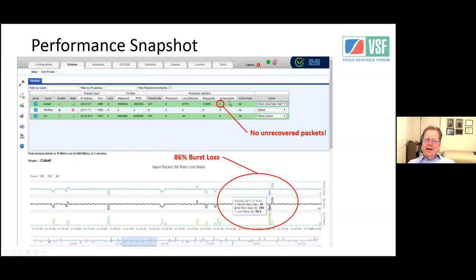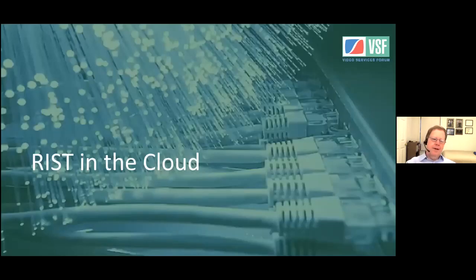Even though there was an 86% loss of data for a given interval, the unrecovered loss was zero. RIST was able to fully fill in the gap because the loss did not exceed the buffer window.